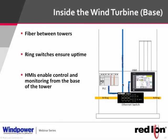The ring ensures uptime: if a fiber optic cable is cut anywhere, the ring heals in 30 milliseconds. PLC peer-to-peer communications between towers would never even detect the outage. The HMI allows you to monitor the network from the base of the tower without climbing. This is our G3 HMI, paired with Crimson software for easy programming, and the 708-FX2 Ethernet switch — our sweet spot switch for this type of application.